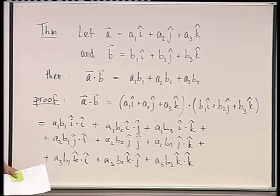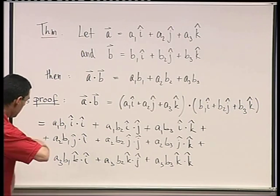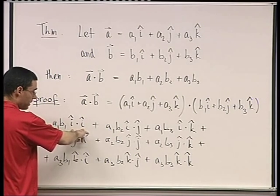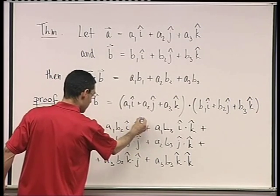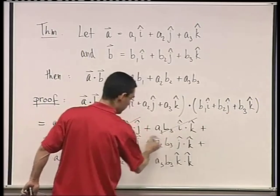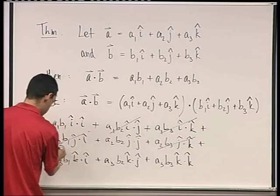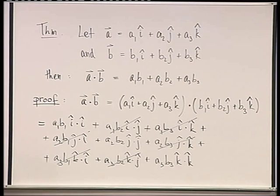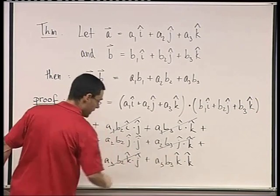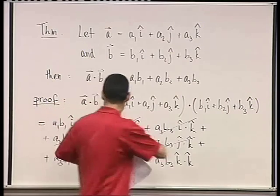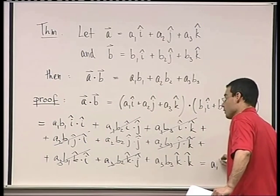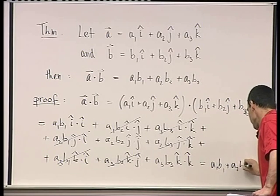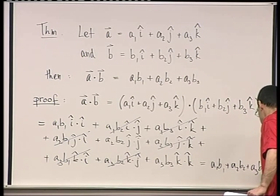Using the previous claims, all terms with different unit vectors — since they're perpendicular — cancel out and equal zero. That eliminates six terms. The remaining three terms, i·i, j·j, and k·k, are each equal to one. So what we're left with is exactly what we claimed: a1b1 + a2b2 + a3b3.